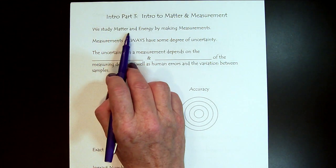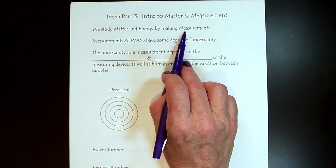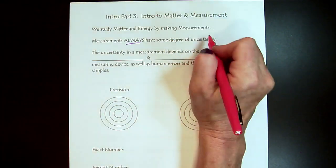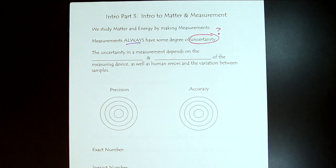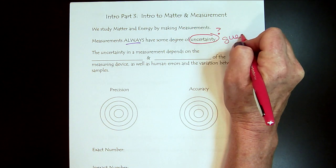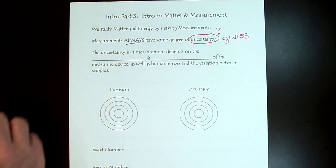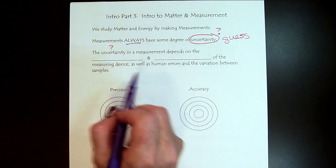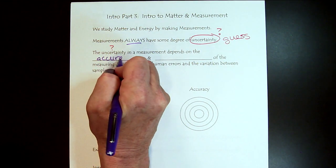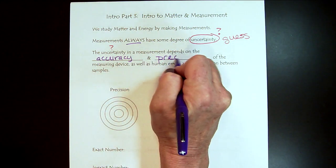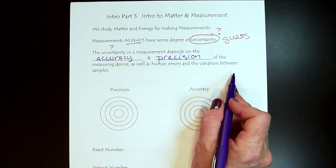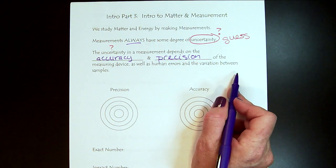When we study matter and energy, we do that by making measurements. Now measurements are always going to have some degree of uncertainty. There's actually quite a bit of guessing in science, which can be a surprise when we're new. So where does this uncertainty come from? It comes from a bunch of places — the accuracy and precision of our equipment, the measuring devices, also human error, and there can be variation in what we're measuring. So there's a lot of factors that come into play.